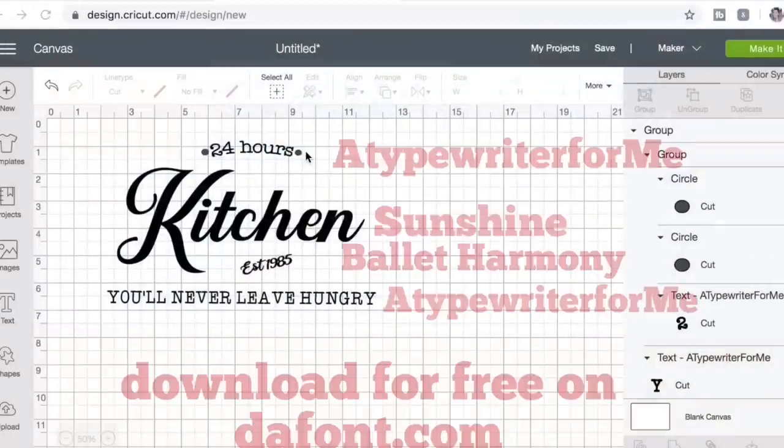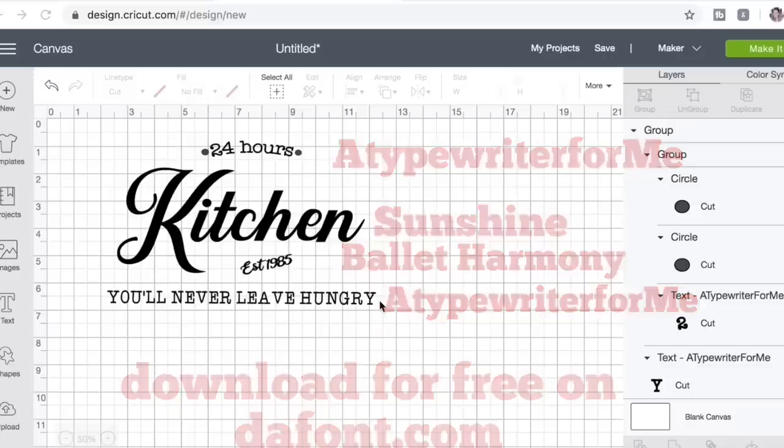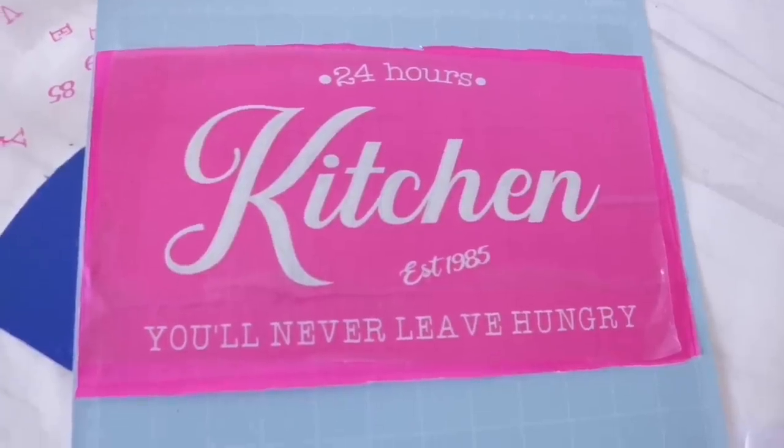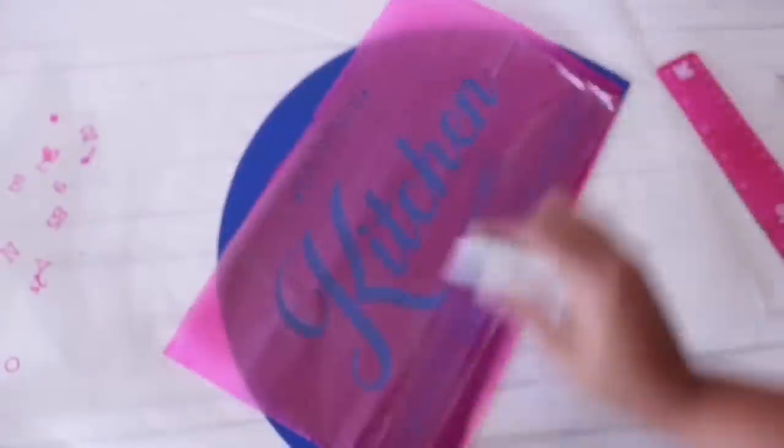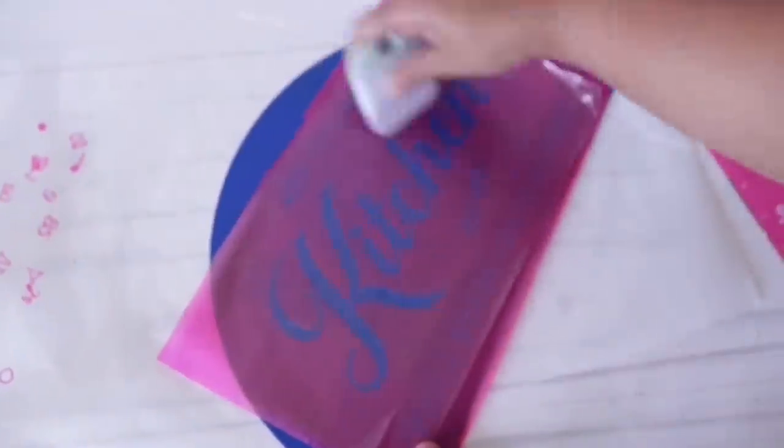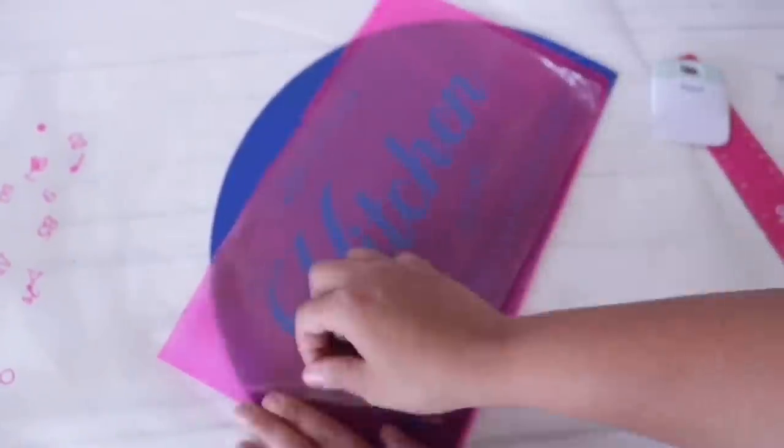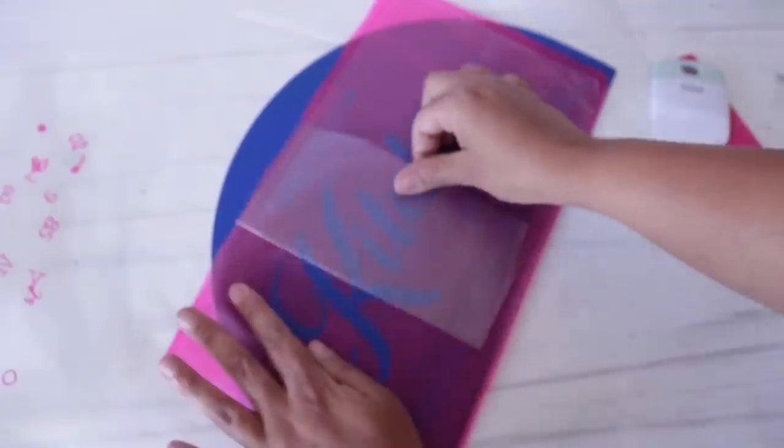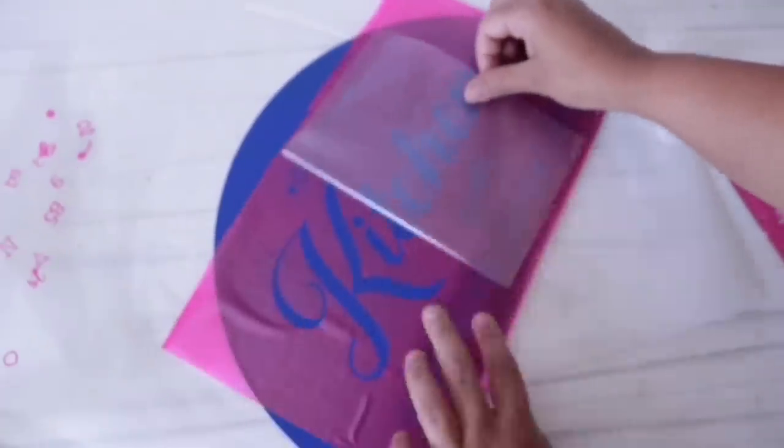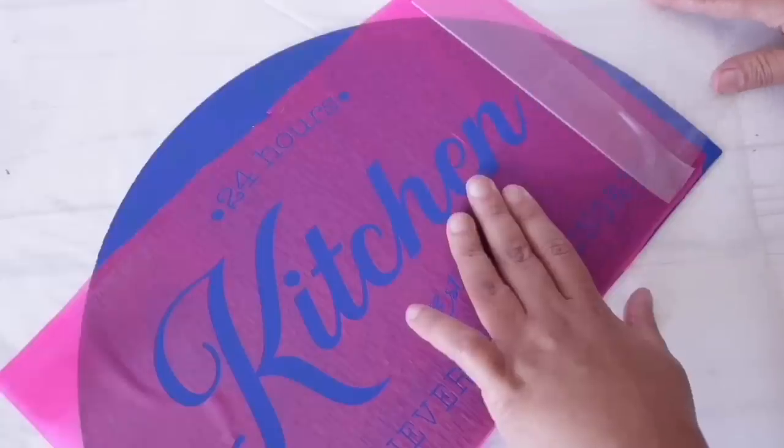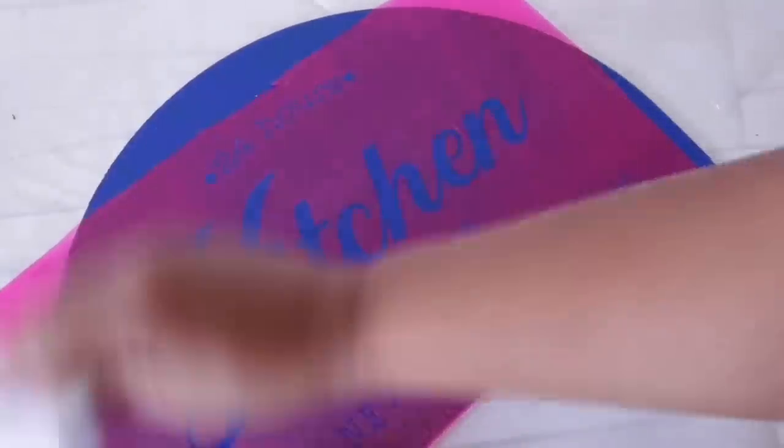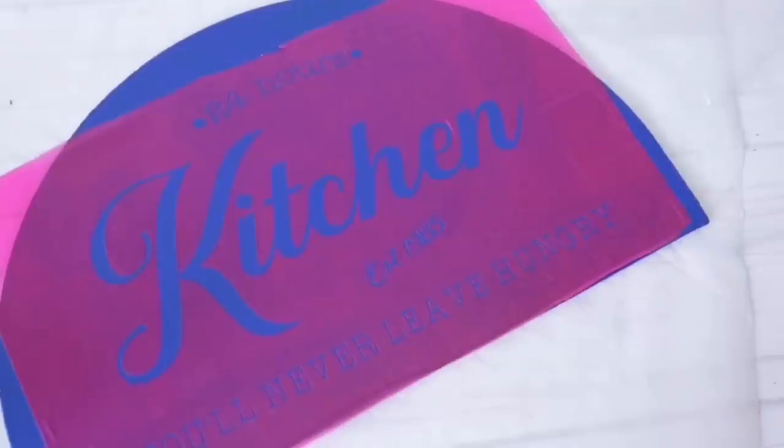These are the fonts that I'm using for my stencil. You can get them for free on dafont.com for personal use and if you are going to be using these for commercial you do have to buy a license. I am going to be using my Dollar Tree book cover and Dollar Tree contact paper to make this stencil. I've been obsessed with doing this lately because it just saved me so much money and look how well everything transfers.